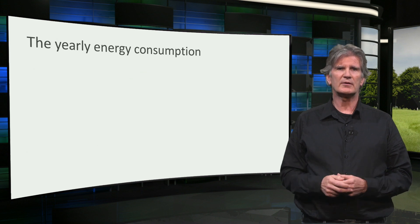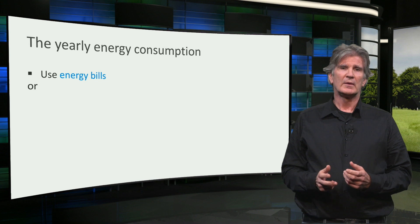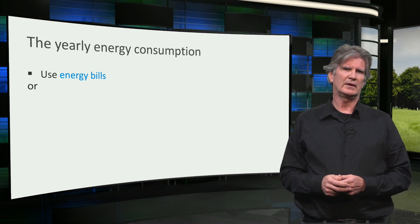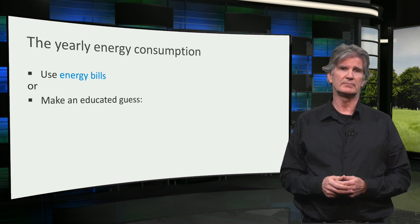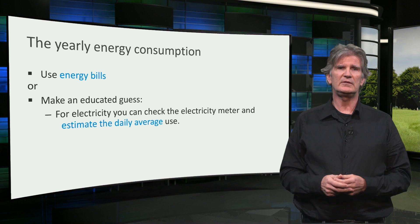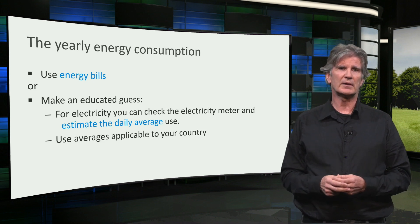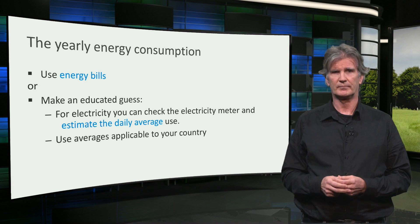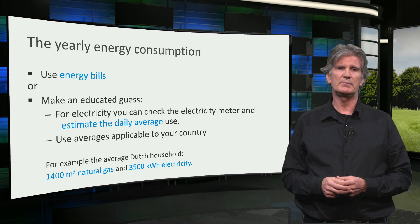The next step is to figure out the yearly energy consumption. If you can get your hands on the energy bills, this is the easiest way. This can be quite hard, because most people have no idea how much energy they use in their own home. Or else you have to make an educated guess. For electricity, you can check the electricity meter for one or two days to estimate the daily average use, or you can take average values applicable in your country. For example, the average Dutch household uses 1,400 cubic meters of natural gas and 3,500 kilowatt hours of electricity per year.